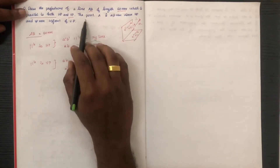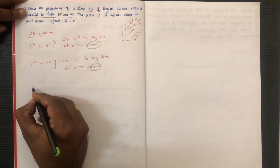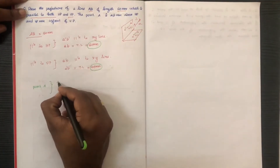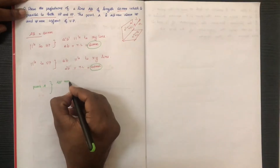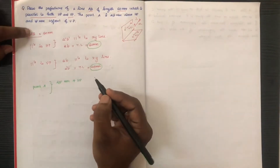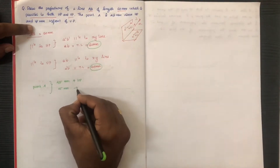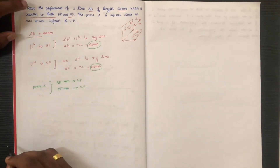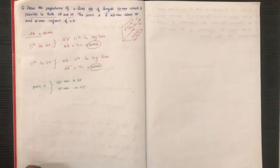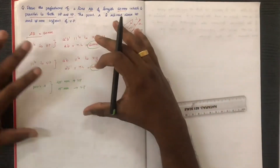Point A is 45mm below HP and 15mm in front of VP. Using these three conditions — the given problem — we can find the solution.